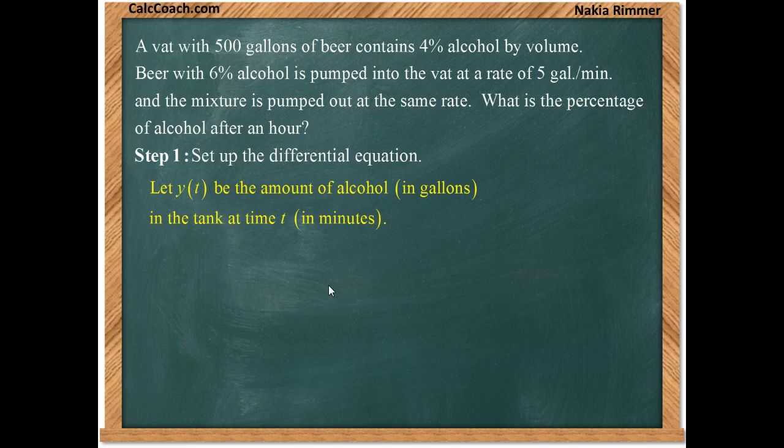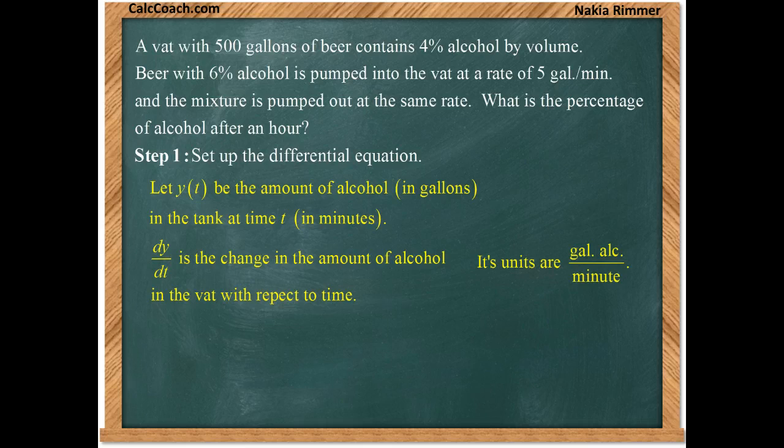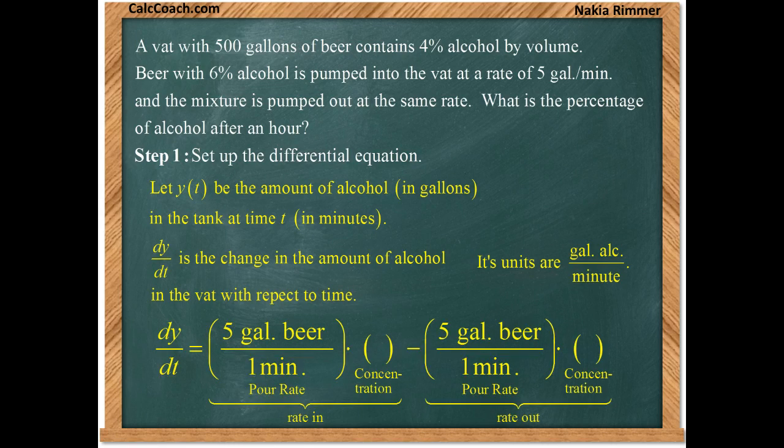Now let's look at dy/dt. It's the change in the amount of alcohol in the vat with respect to time. Its units will be gallons of alcohol per minute. Y is in gallons of alcohol and t is in minutes. So we'll be able to measure dy/dt by doing the following: we have alcohol coming in and we have alcohol going out. The change in alcohol over time will be the difference there, the rate at which is coming in minus the rate at which is going out.